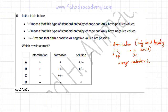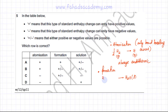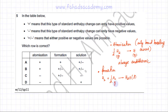Moving to the next one, which is enthalpy change of formation. This enthalpy change of formation is when one mole of a substance is formed from its constituent elements. For example, one mole of H₂O liquid is formed from its constituent elements: hydrogen and oxygen, which is O₂ in its standard gaseous state. Balancing gives half O₂. Both hydrogen and oxygen are in their standard gaseous state.